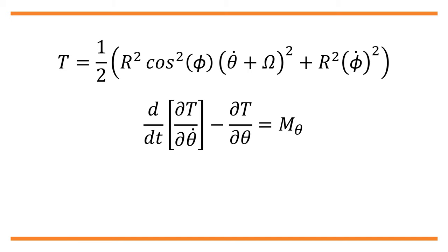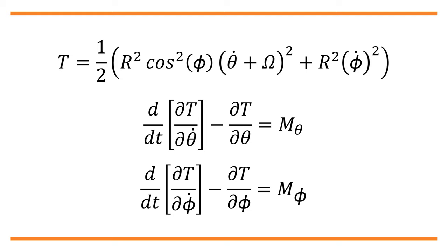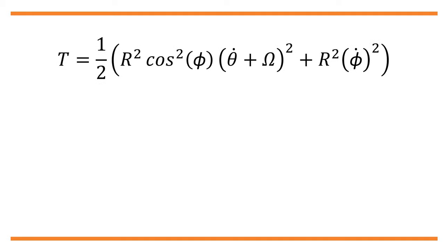In Lagrangian mechanics we have the following equations of motion: d/dt [∂T/∂θ̇] − ∂T/∂θ = M_θ, and d/dt [∂T/∂φ̇] − ∂T/∂φ = M_φ. Let's find out what each term actually is.